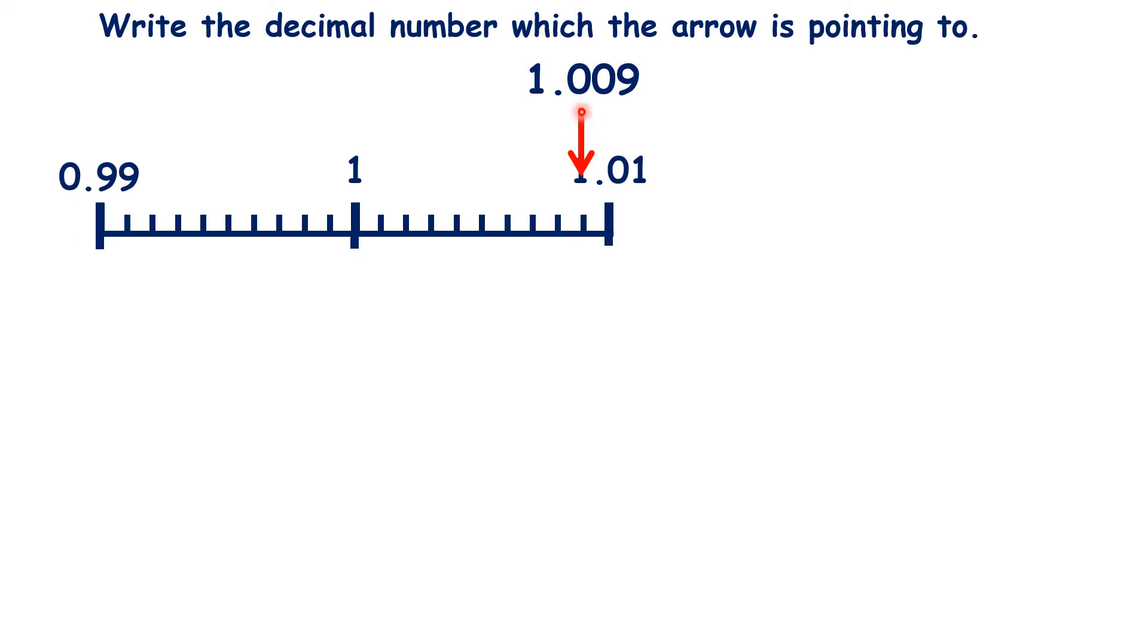We have 1.009. So there's an easy way to do this. Let's write the numbers 0.99 and 1.01 so that they have three decimal places. That gives us 0.990, 1.000, and 1.010.